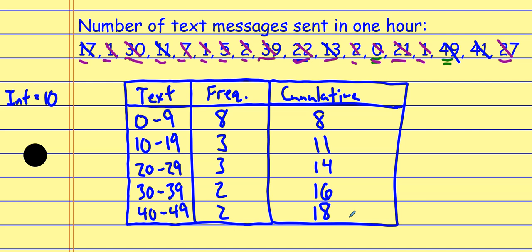To recap: frequency is how often something occurs. In a frequency table we split data into intervals — be careful counting those intervals. The cumulative frequency keeps a running tally across groups. A histogram looks like a bar graph with touching bars and is the conversion of a frequency table into a graph.